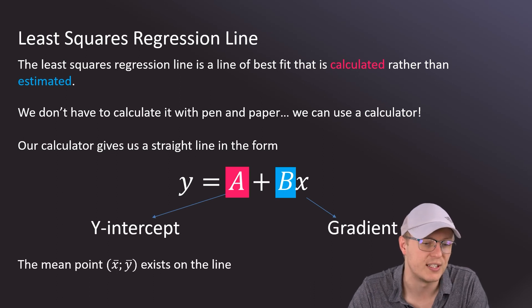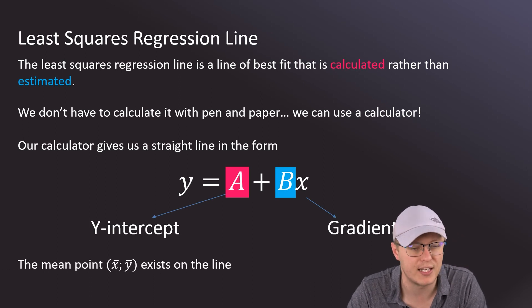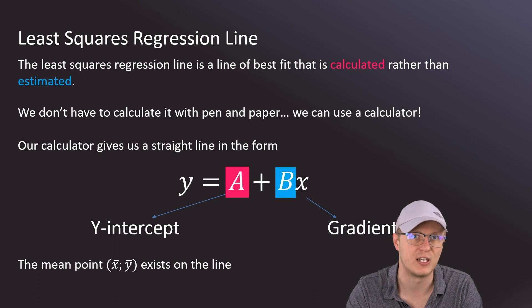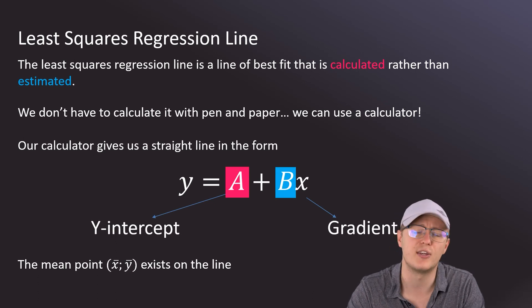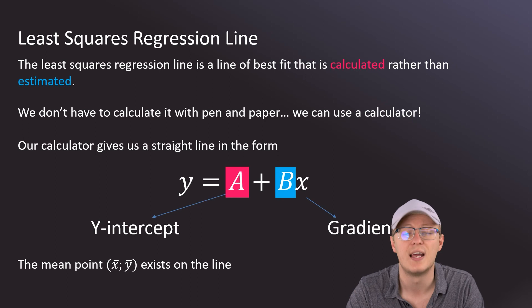What's also important is that the mean point (x̄, ȳ) exists on the line, where x̄ is the mean of all the x values and ȳ is the mean of all the y values.